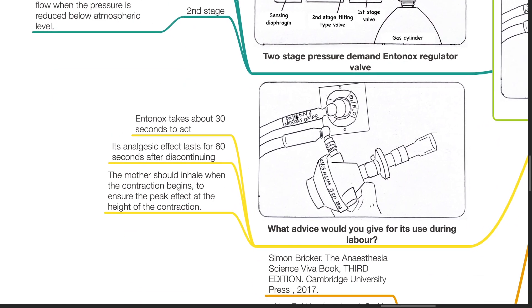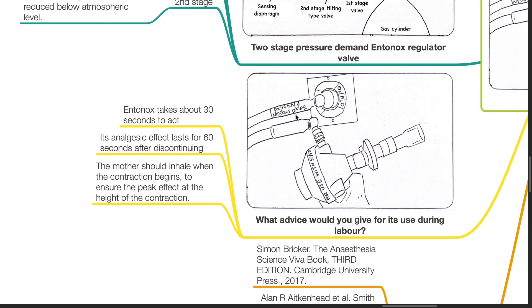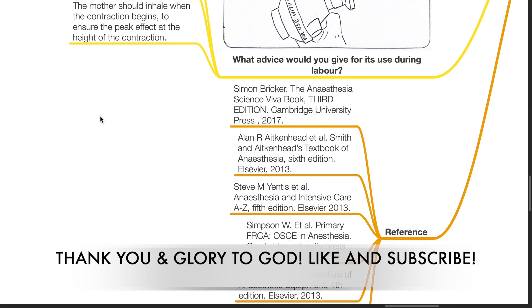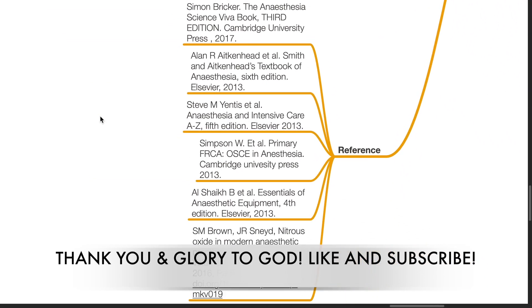What advice would you give for its use during labor? Entonox takes about 30 seconds to act. Its analgesic effect lasts for 60 seconds after discontinuing. The mother should inhale when the uterine contraction begins to ensure the peak effect at the height of contraction. These are my references. Thank you.